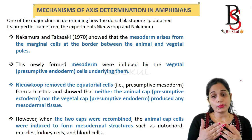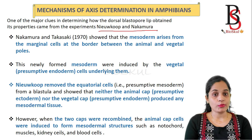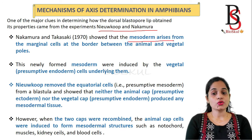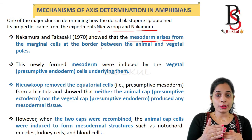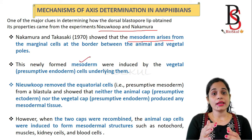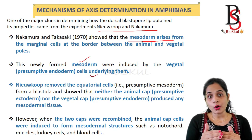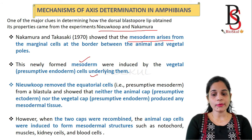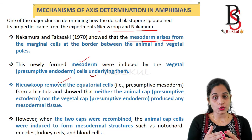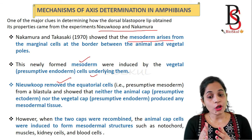To understand how the dorsal blastoporal lip acquires this property, we look at experiments by Nieuwkoop and Nakamura. They showed that mesodermal tissue arises from the marginal cells at the border between the animal and vegetal poles, and the newly formed mesodermal tissues are induced by the underlying vegetal cells. Nieuwkoop removed the presumptive mesodermal cells from the blastula and showed that neither the animal cap nor the vegetal cap alone produced any mesodermal tissue.